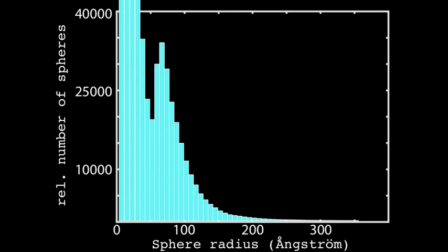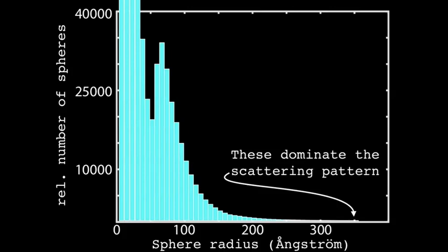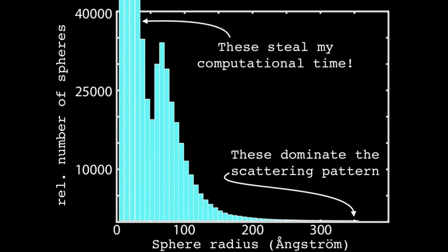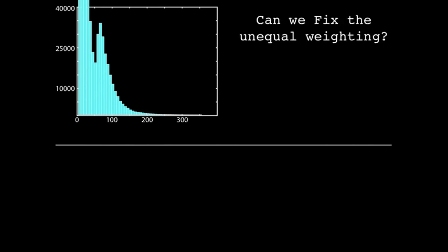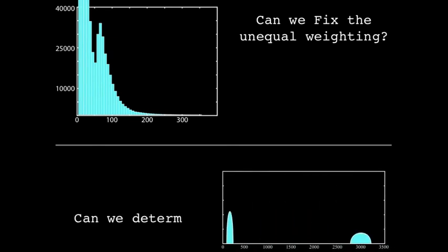There was an additional issue: if we do the Monte Carlo fit, it's the large particles which dominate the scattering pattern, which means that in order to have any effect on the scattering pattern I need a lot of large spheres, and these steal computational time. So this talk answers two questions: can we fix the unequal weighting so that we don't lose computational time, and can we determine what is visible in these size distributions?